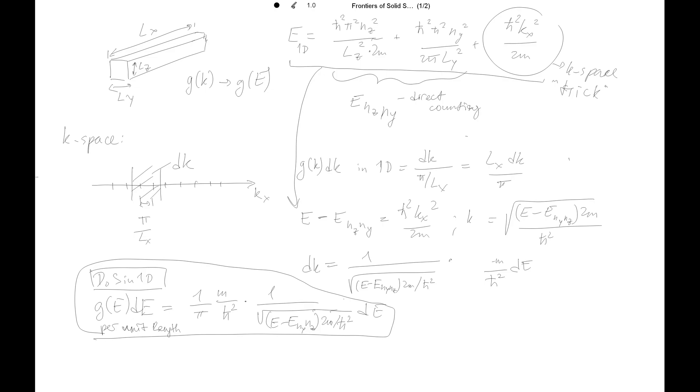And then we need to take into account spin times two. Then we can rearrange a few bits. The square root of 2m, you can bring this from inside that part. And ℏ, you can also take out ℏ from there. You have now just ℏ.